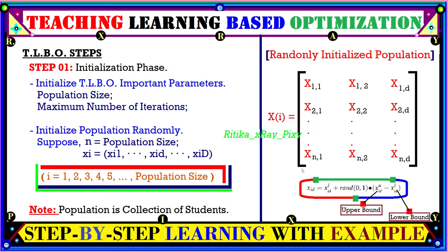Now we have the certain steps followed in this algorithm. First, we have the initialization phase where we initialize the population and maximum iterations. The simplicity of this algorithm is that it has no controlling parameters — just population size and maximum iterations. However, this is also a disadvantage: with no controlling parameters, this algorithm easily gets stuck in local optima and while solving difficult problems it is unable to reach the best global solution.